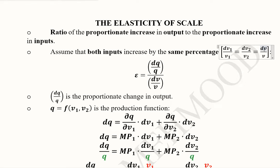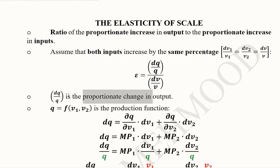So we don't use any subscript; instead we use dv over v. The formula now becomes: this is the proportionate change in output and this is the proportionate change in input. We can use the dv over v term for it, based on the assumption we just established.